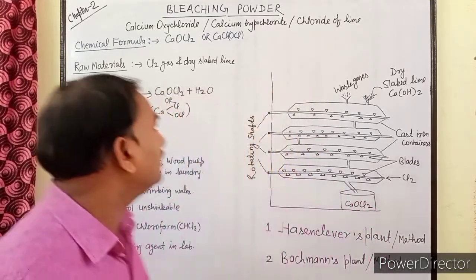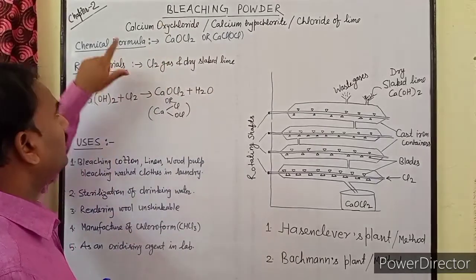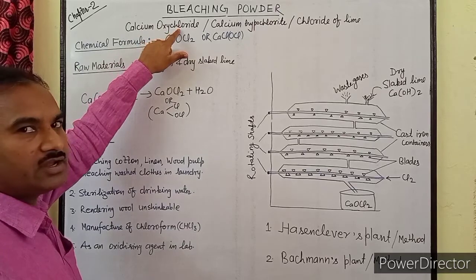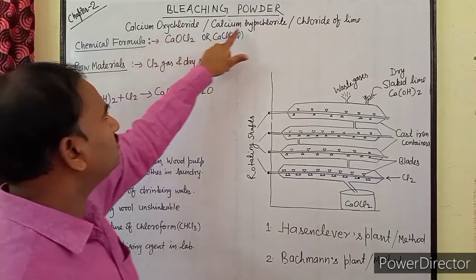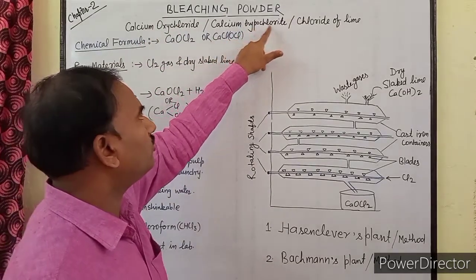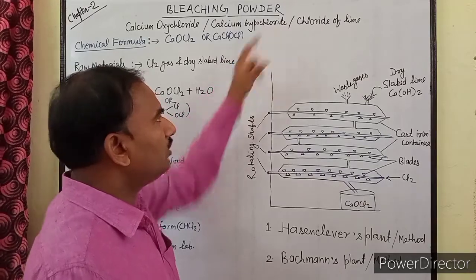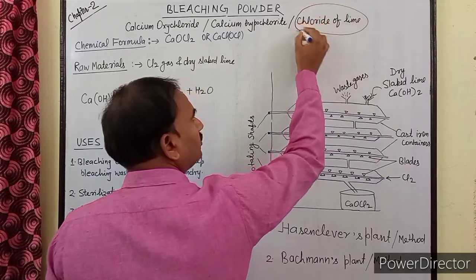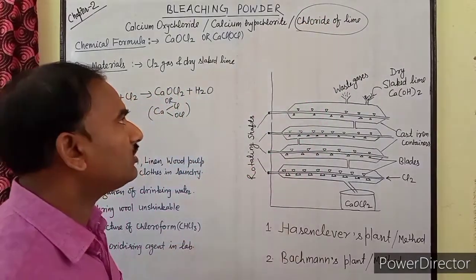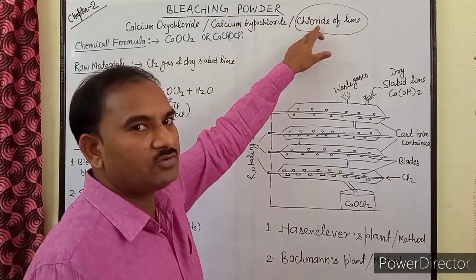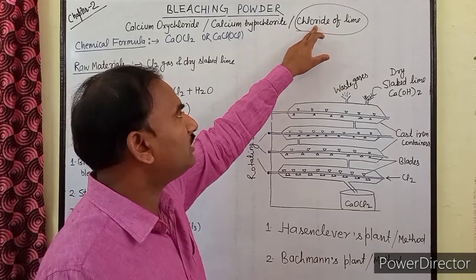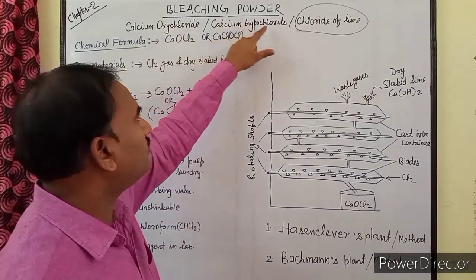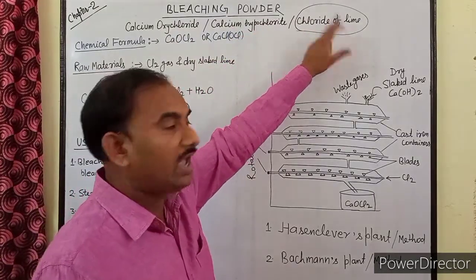First of all, bleaching powder is called calcium oxychloride. We also call it calcium hypochlorite, and most importantly it is called chloride of lime. So it is called bleaching powder, calcium oxychloride, calcium hypochlorite, and chloride of lime.